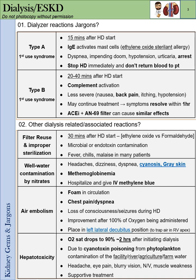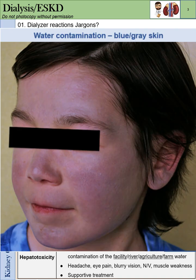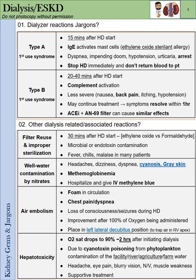Well water contamination by nitrates causes patients to present with headache, dyspnea, cyanosis, and gray skin — like methemoglobinemia. You have to hospitalize and give IV methylene blue.